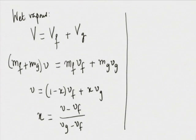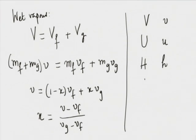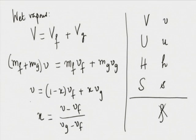This formula is valid if you replace V and specific volume by U and specific internal energy, H and specific enthalpy, and S and specific entropy. However, this is not valid for density — do not write density of the system as (1 minus x) times density of liquid plus x times density of vapour, because density is per unit volume, not per kg of system mass.